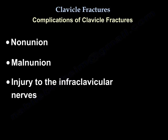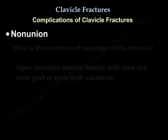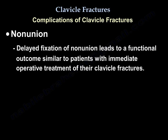Complications of clavicle fractures include nonunion, malunion, and injury to the infraclavicular nerves. The risk factors for nonunion are major fracture displacement and comminuted fracture — a displaced and comminuted clavicle fracture may have problems healing, especially in an older female patient who smokes. Treatment of nonunion is open reduction and internal fixation with plate and bone graft or bone graft substitute. Delayed fixation of nonunion leads to a functional outcome similar to patients with immediate operative treatment.